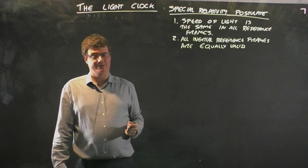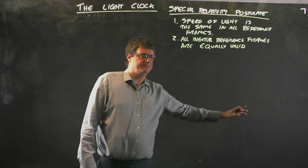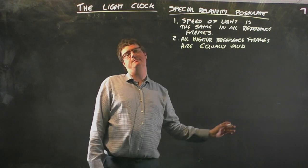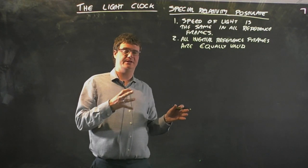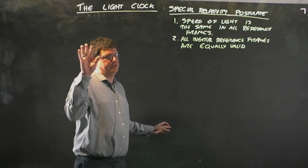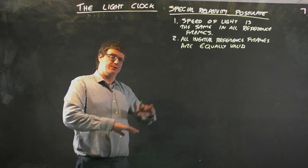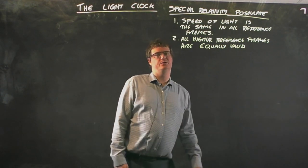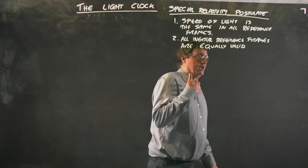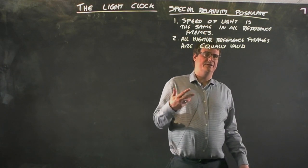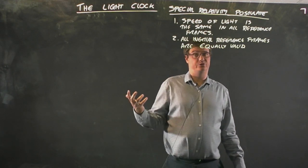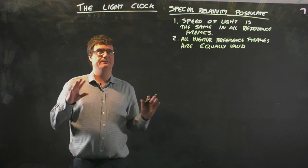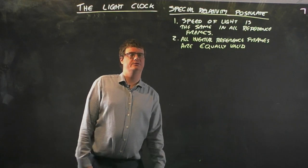An inertial reference frame is any object that's not accelerating. A spaceship coasting through space doesn't matter how fast it's going; if it's not got its thrusters moving, and we're in interstellar space not near any planets or stars, it's just going in a straight line. That's an inertial reference frame. A train on a straight track is a nice example as long as it's not accelerating.